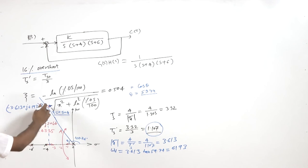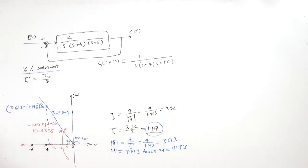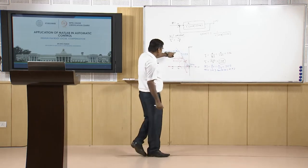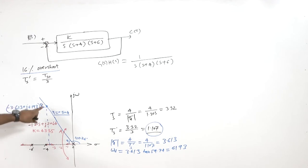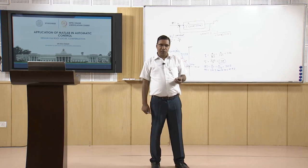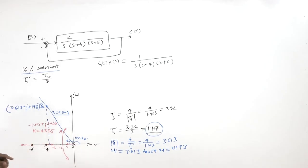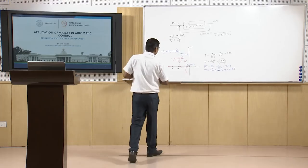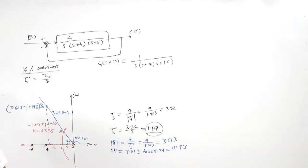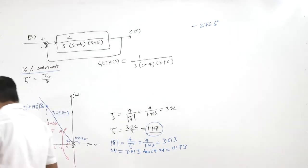We now want the root locus to pass through point B. The angle condition must be satisfied, so that the desired point B lies on the root locus. We compute how much angle point B makes with respect to the open loop poles. We will add a compensator zero according to PD controller theory. Computing these angles, we find the total angle is -275.6 degrees.